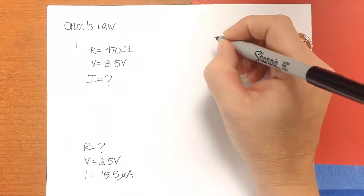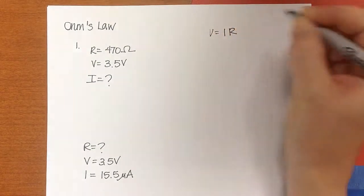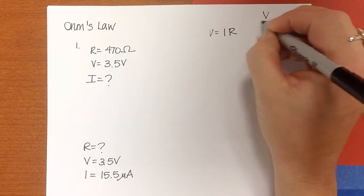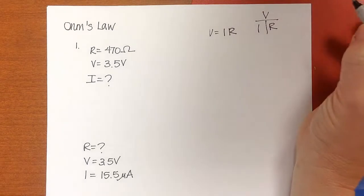Remember that Ohm's Law is V equals IR, or if you prefer to use the triangle-circle deal, you can write it like that.